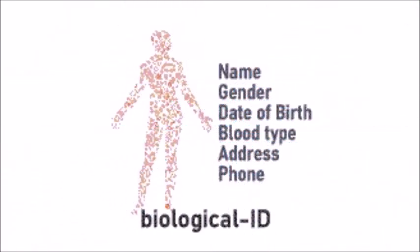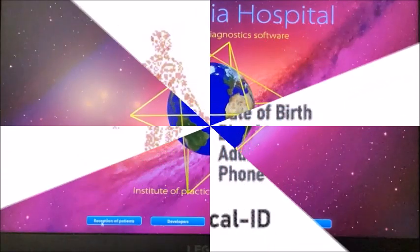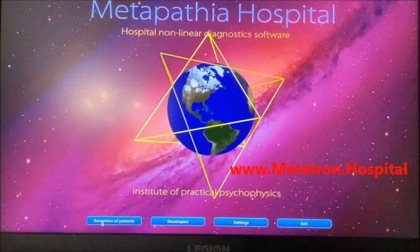Required information that determines your Quantum ID are name, gender, date of birth, blood type, address, and phone.